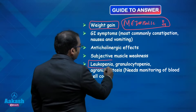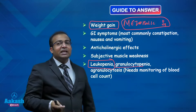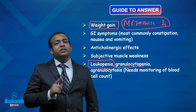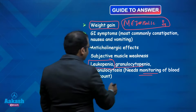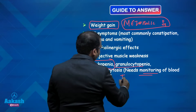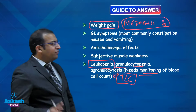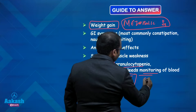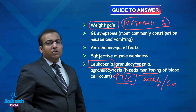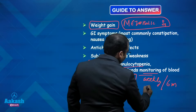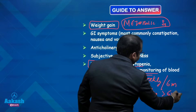Another significant side effect to remember is that clozapine can lead to leukopenia or granulocytopenia — it reduces the granulocyte count in peripheral blood. Patients on clozapine need regular monitoring of blood cell counts, especially the leukocyte count. TLC should be done every week for the first six months, and then every 15 days or fortnightly after six months of treatment.